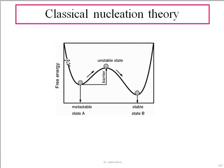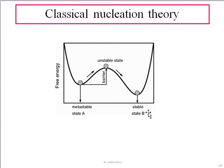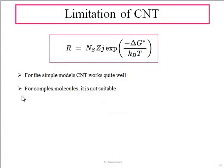This graph from Classical Nucleation Theory has free energy on the y-axis and various states on the x-axis. Initially the system forms a small state which appears stable but is actually a meta-stable state, lasting only a short period. Immediately after, it moves to an unstable state, and later to a stable state — state P. One advantage of CNT is that it is a very simple, basic model, but it cannot be implemented for complex molecules and complex solutions.